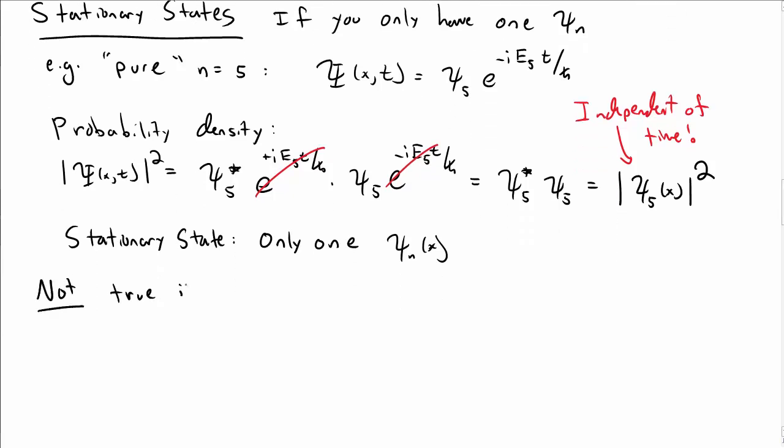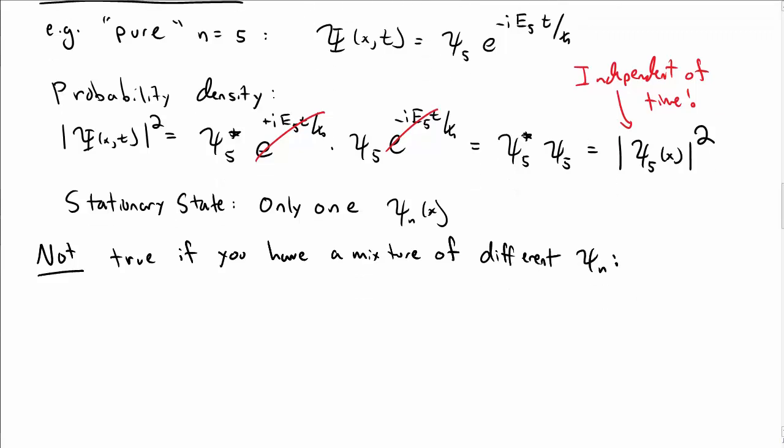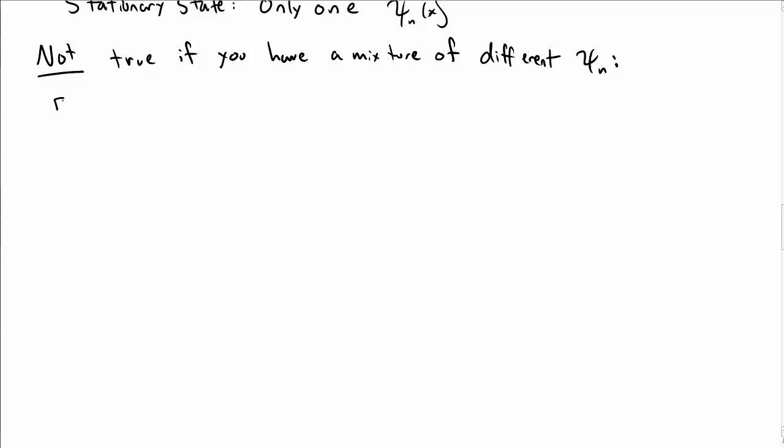Note that this is not true if you have a mixture of different ψ sub n's in your total wave function. So in particular, as an example, let's consider capital Ψ is a mixture of 2 sine of πx over L e to the i E_1 t over ℏ and then 3 sine of 2πx over L e to the minus i E_2 t over ℏ. So I have the n equals 1 and an n equals 2 state here.